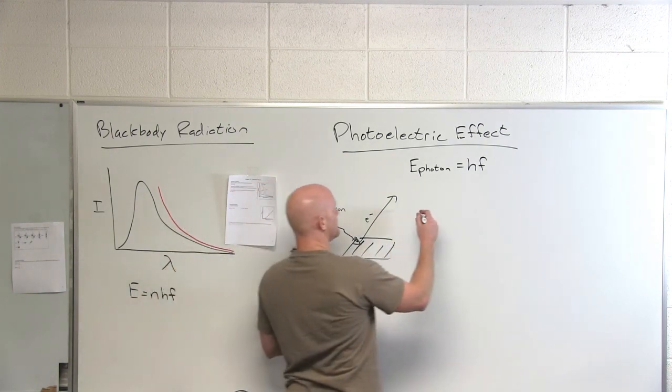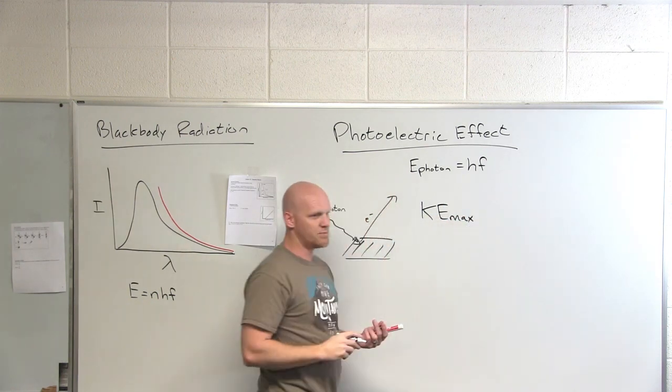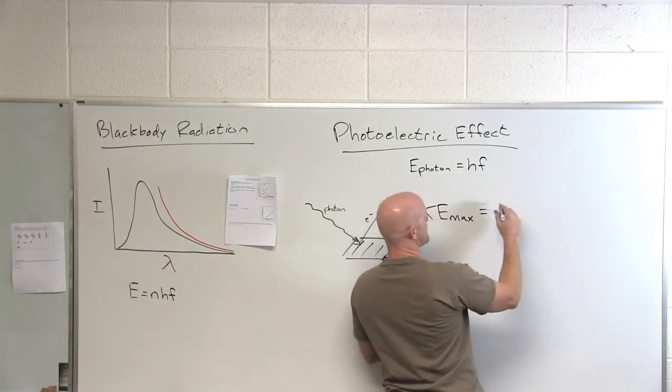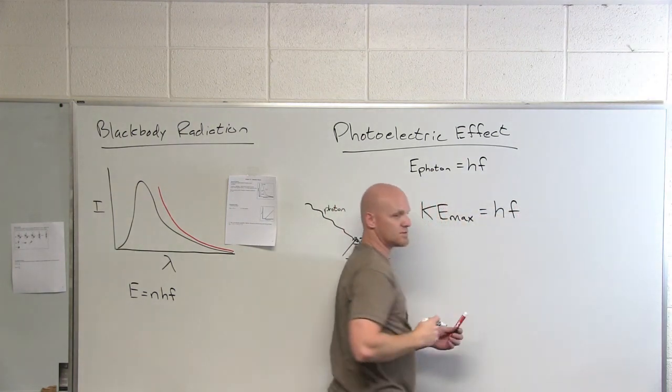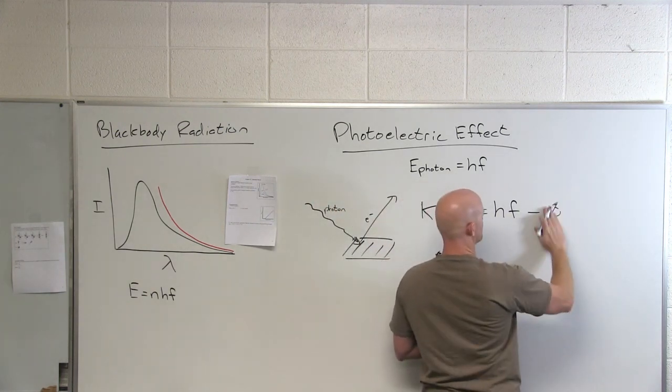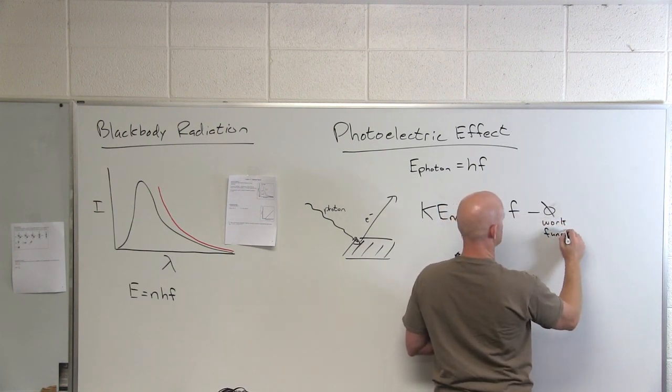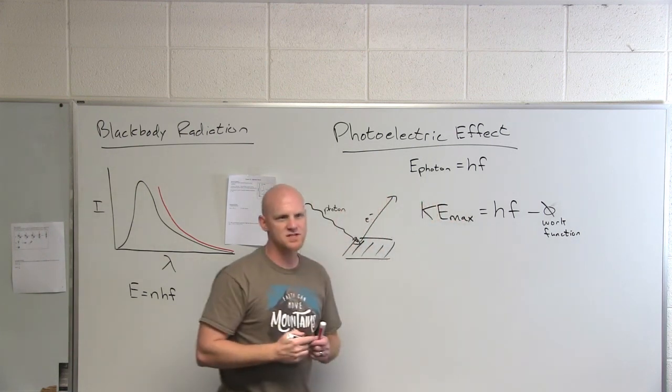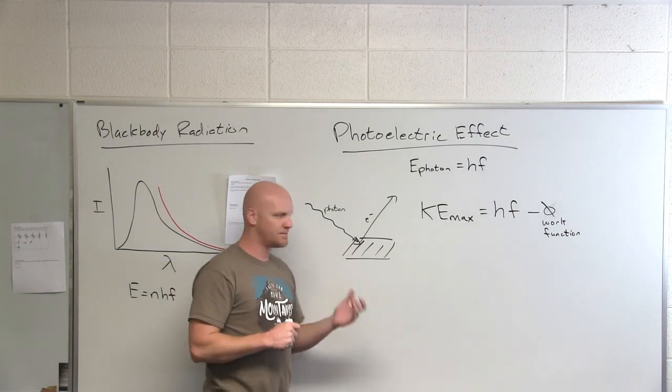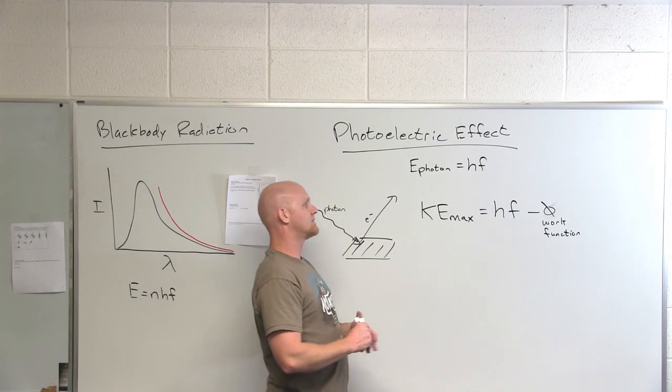It turns out that the higher energy of the light you hit it with, the greater the maximum kinetic energy you might end up with on the electrons ejected. If you took the energy of your photons, which we learned was equal to hf, and you subtract off something called the work function. The work function is just the minimum energy required to eject an electron from a particular metal. Depending on the metal, they might have different work functions. It's related to ionization energy.